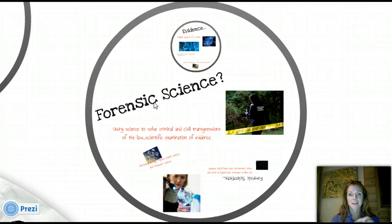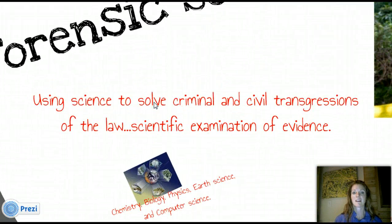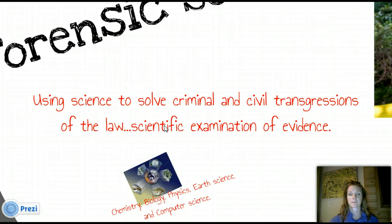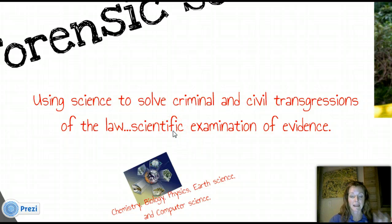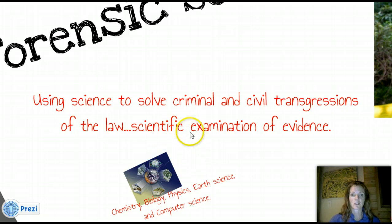But at the same time, you'll see a video towards the end that shows forensic science is not really all that's encompassed in CSI. There's a lot more to it. The overall definition is using science to solve criminal and civil transgressions of the law. My favorite part of that definition is a very simple term: scientific examination of evidence. Forensic scientists use the scientific method to examine evidence, figure out what it is, what part it played in a crime, and lead them to the next clues.